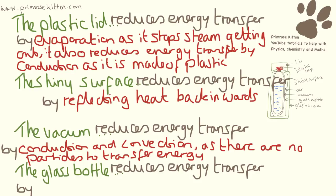The glass bottle reduces energy transfer by conduction as it is a poor conductor of energy. So these are just four examples you could have answered for this question. You could have done lots of other things for this. These are just four things, but I think this is a really good way to structure your answer.